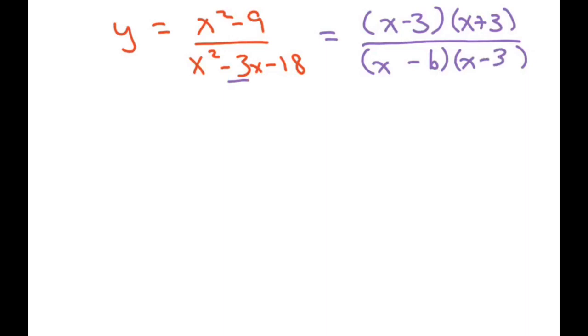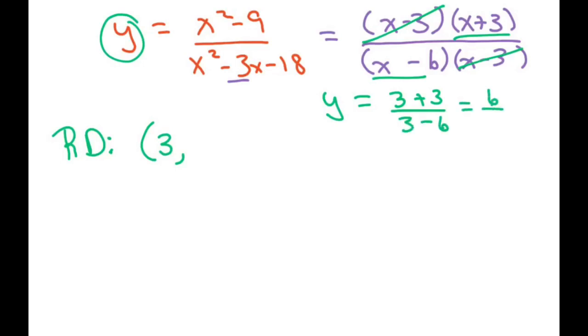So we do have a removable discontinuity right here, and it's a point, so that would be 3. And you use your reduced equation, y equals this. This is our reduced equation. And you plug in 3, so you get 3 plus 3 over 3 minus 6. So this would be 6 over negative 3, which equals negative 2.